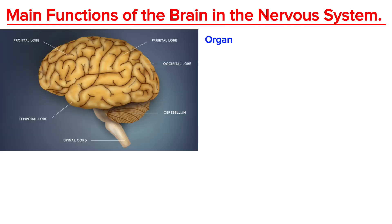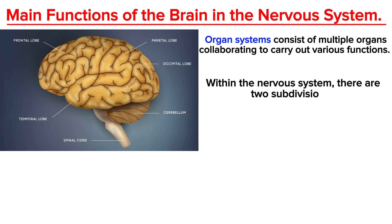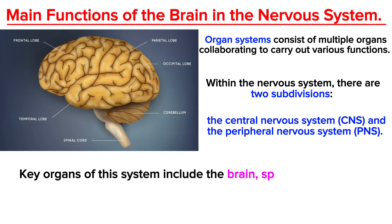What you need to know is that organ systems consist of multiple organs collaborating to carry out various functions — that is the definition of organ system. Within the nervous system there are two subdivisions: the central nervous system (CNS) and the peripheral nervous system. Key organs of this system include the brain, spinal cord, ganglia, and nerves.